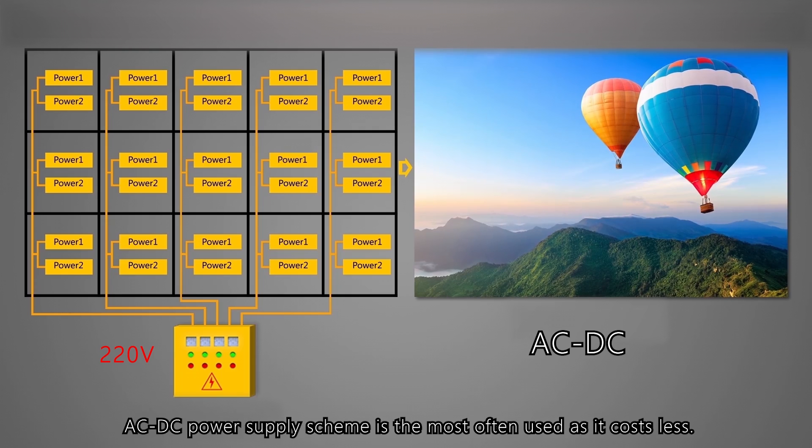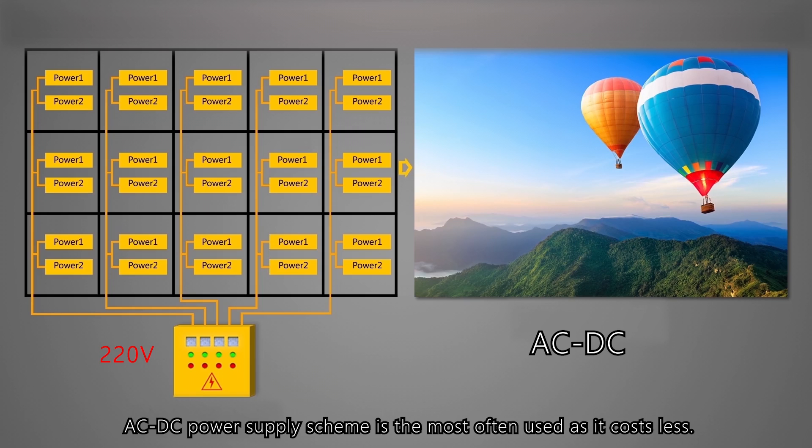AC to DC power supply scheme is the most often used as it costs less.